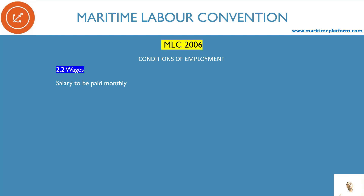This is also very important when reviewing a contract. If the frequency of payment is more than a month, you should be very careful about joining that company or ship. If they are not able to pay your salary regularly, these are starting signs of abandonment. You should be very careful joining a ship where you are not getting remittance on a monthly basis. As per MLC, monthly is the maximum duration between payments.